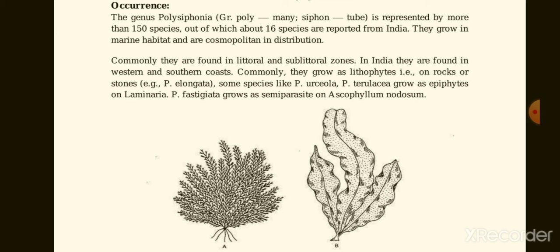Polysiphonia occurs in the sublittoral zone as well as in tidal marshes, brackish estuaries, and tidal pools. It shows branched heterotrichous, siphonaceous, and lithophytic growth, meaning they grow on rocks. Some species are epiphytic, growing on other algae. They are commonly found in littoral or sublittoral zones.